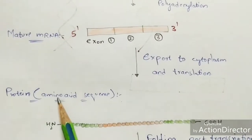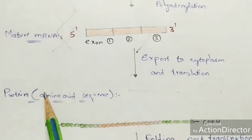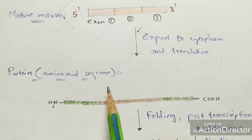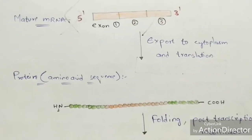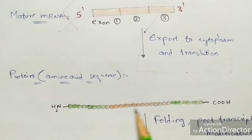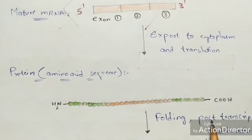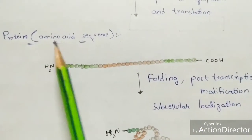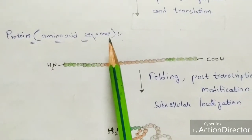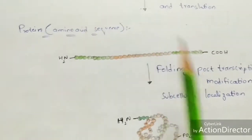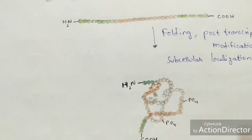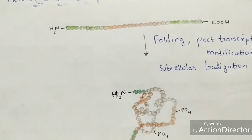Through translation, amino acid sequences are produced — a group of amino acids forms a protein. The amino acid sequence then undergoes folding, also called post-transcriptional modification or sub-cellular localization, and forms a protein. This is how protein synthesis occurs via DNA and RNA.